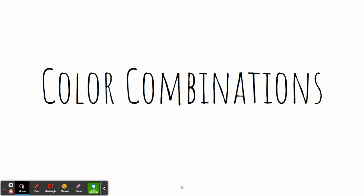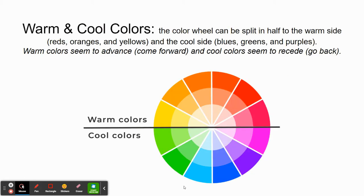Color combinations — there are different ways you can use colors together to create different feelings within your artwork. The color wheel split in half gives us warm colors and cool colors. Warm colors are typically reds, oranges, and yellows. Cool colors are typically greens, blues, and purples. Warm colors tend to advance or come forward in a piece of art, whereas cool colors seem to recede or go back into the distance. Thinking about where you place your warm and cool colors is really important in how your space feels within your artwork.